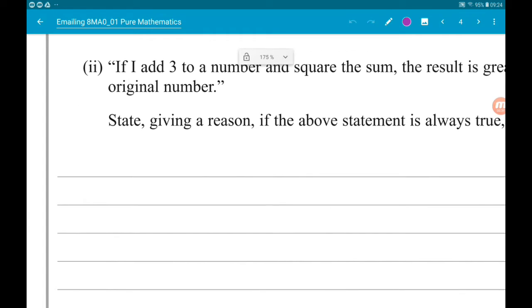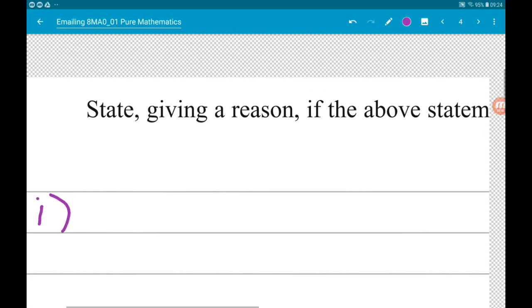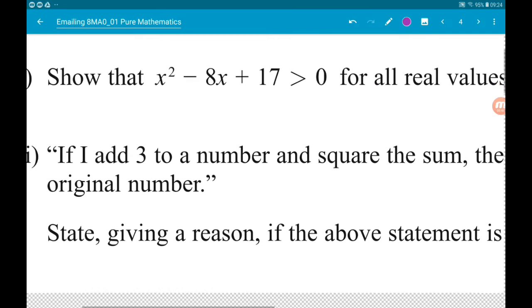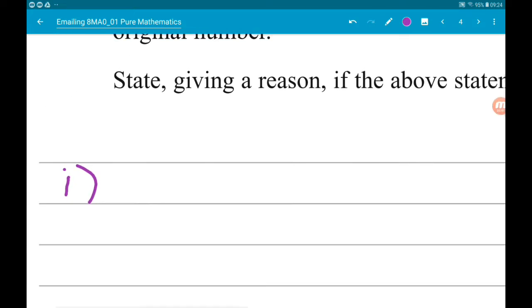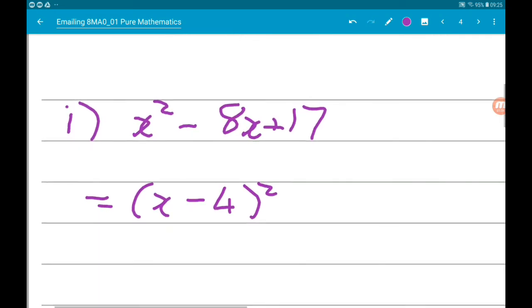So x squared minus 8x plus 17 can be written as x minus 4 squared. Now we have to subtract 4 squared on the other side, so minus 16 plus 17.